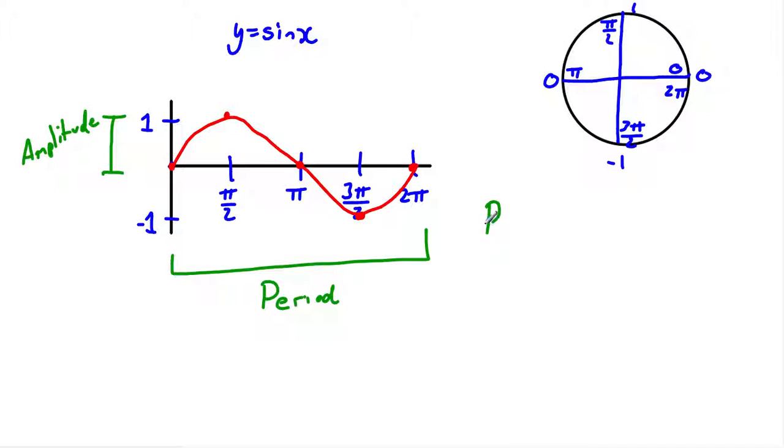So if we have the period, we can find that by the formula 2 pi over B, and we can find the amplitude by the absolute value of A.